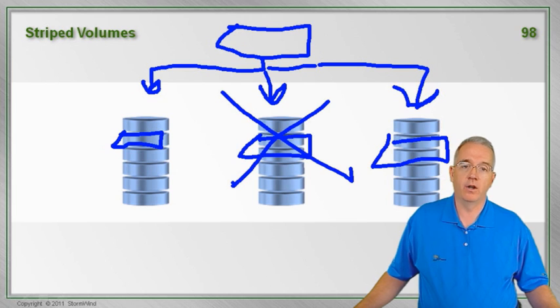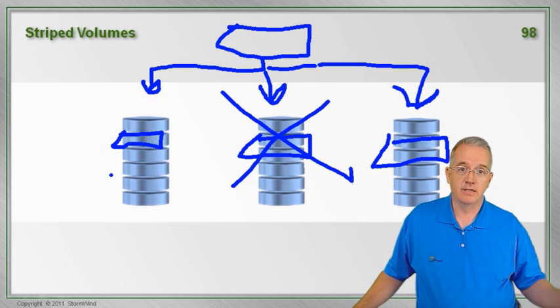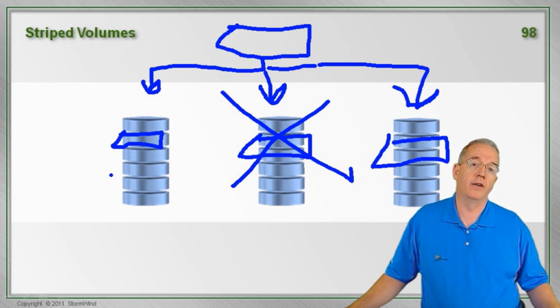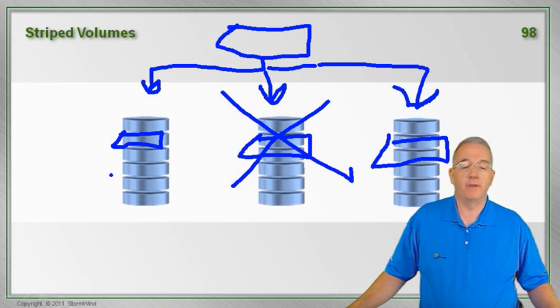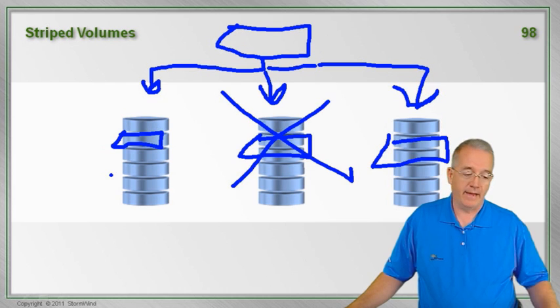The problem with stripe sets, though, is it's fault intolerant. If I lose one drive, I can't access any of this because the information is striped across it. So stripe volumes are very fault intolerant, but they are very fast.